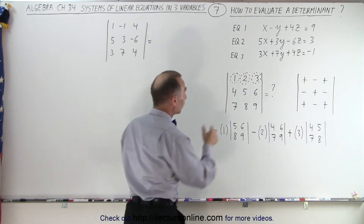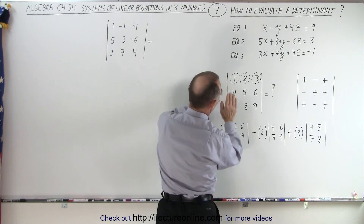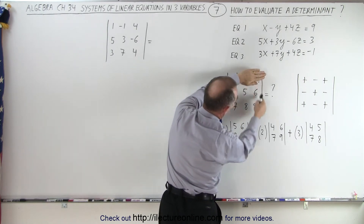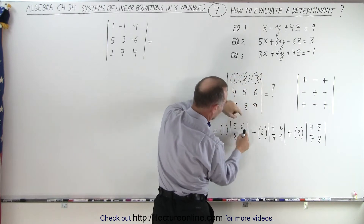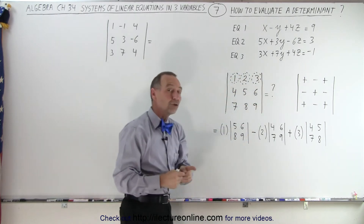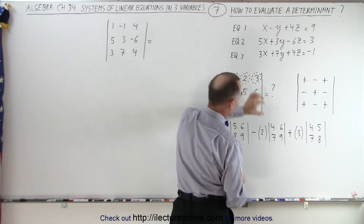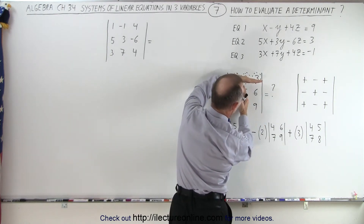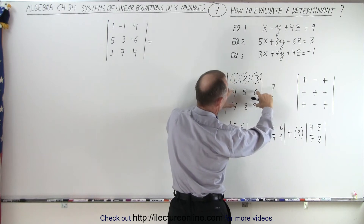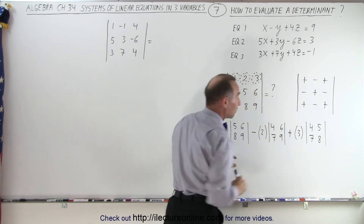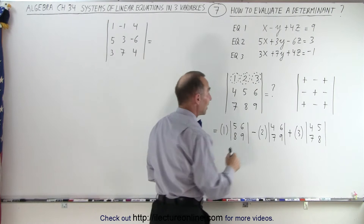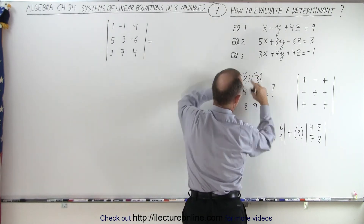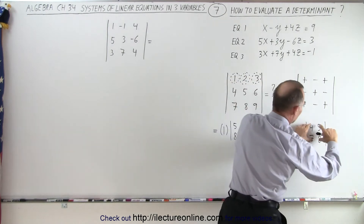We put the 1 here, 2 there, and 3 over there, with their respective signs. For the 1, we block out its column and row, leaving four numbers that go into a mini 2x2 determinant. For the 2, we block out its row and column, leaving 4, 6, 7, and 9 for the next mini determinant. For the 3, we cross out its column and row, and the remaining four numbers go into the last mini determinant.